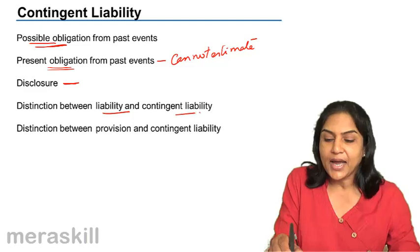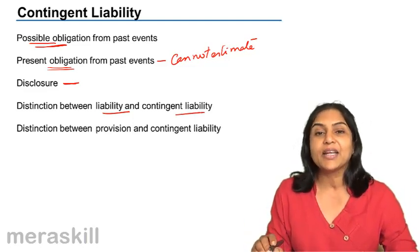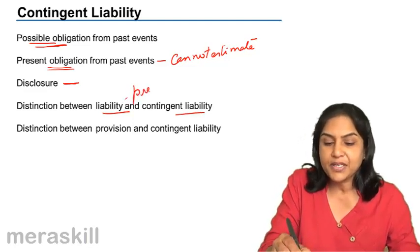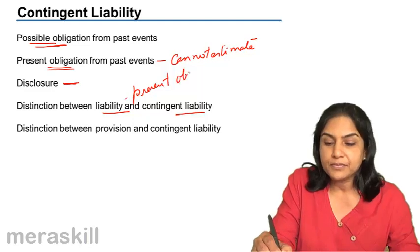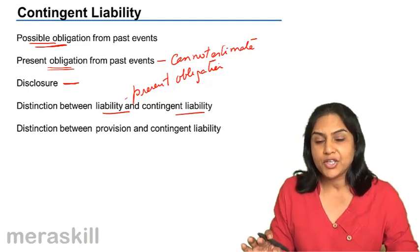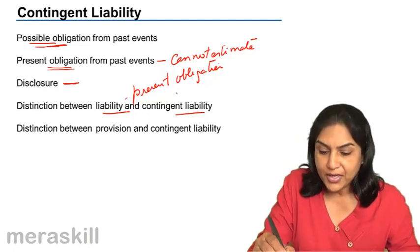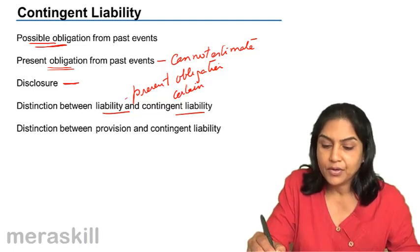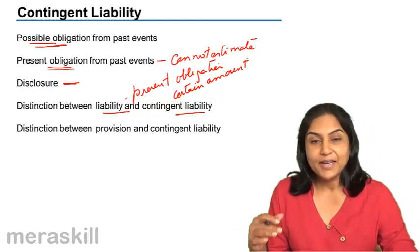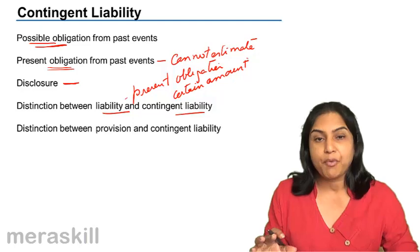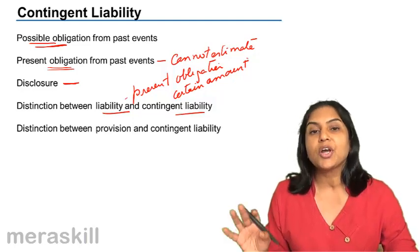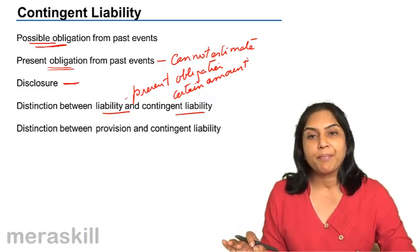How do we distinguish between a liability and a contingent liability? A liability is a certainty — the obligation has arisen, it is a present obligation, and we know the amount involved. But a contingent liability is a possible obligation; we still do not know. An obligation could arise in the future on the happening or non-happening of an event.